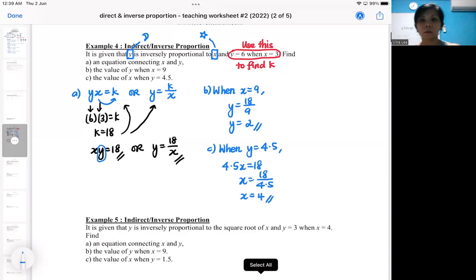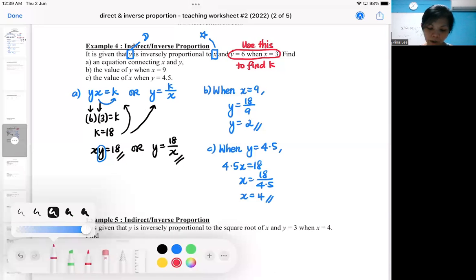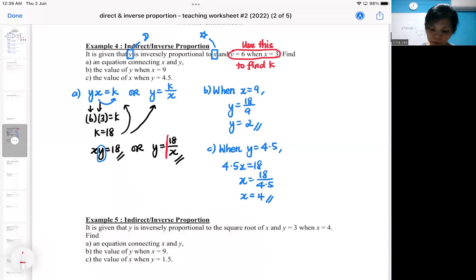It's very similar to direct proportion, except that now the setup is different, but mainly it's still algebra. In some situations, it might involve a bit of cross multiplication because no matter what, you have a fraction involved.